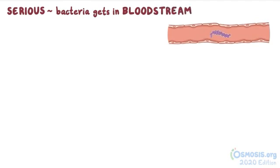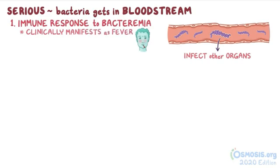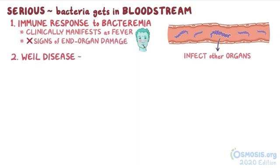Serious problems start when leptospira gets into the bloodstream, where it can move to infect other organs. This typically happens in two stages. In the first stage, there is an immune response to bacteremia, which clinically manifests as fever, but the bacteria are confined to the bloodstream and there are no signs of end-organ damage. In the second stage, also known as Weil's disease, the infection becomes more severe, and the bacteria spread to almost all internal organs.